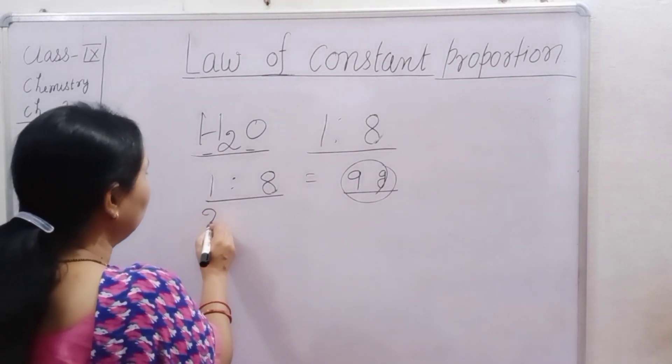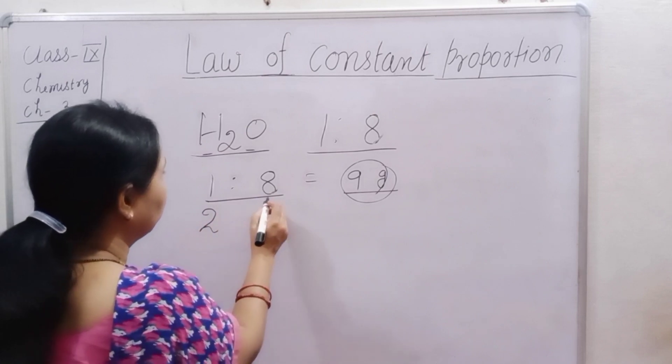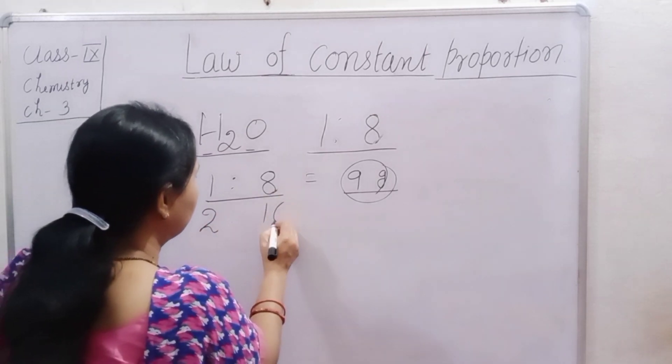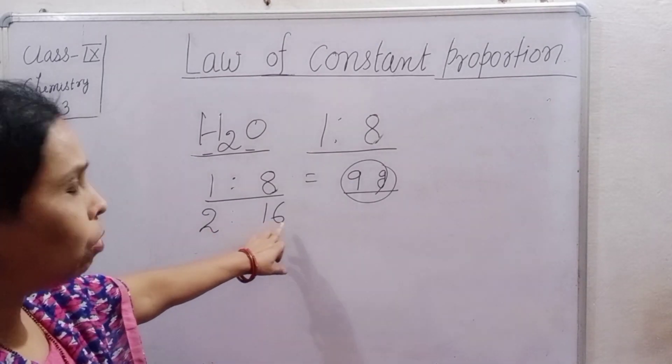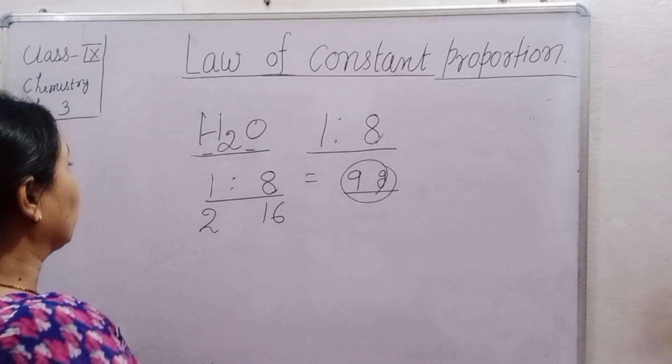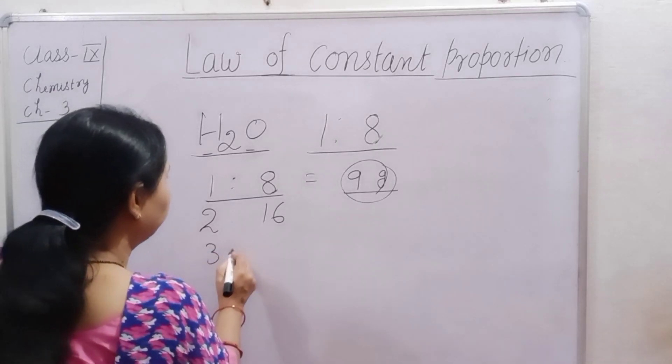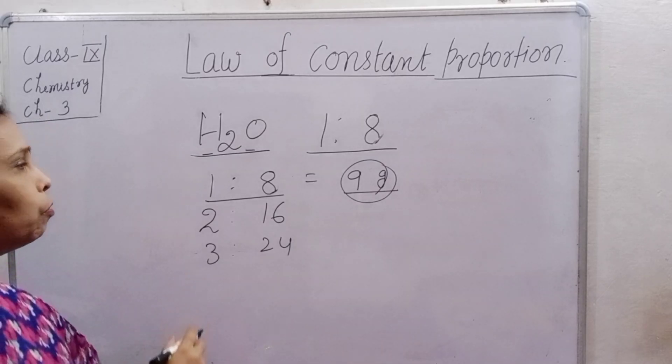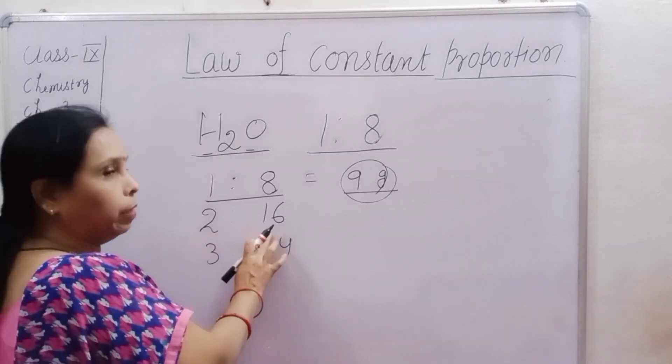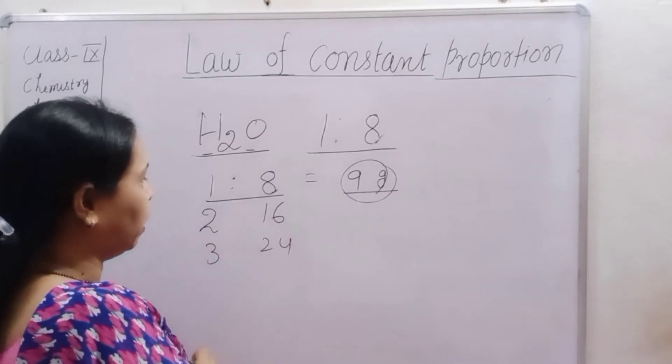Next, if we two and here sixteen. Proportion is two is to sixteen. Three is to twenty-four. Okay? Now, if we simplify them. Again, if we simplify them.